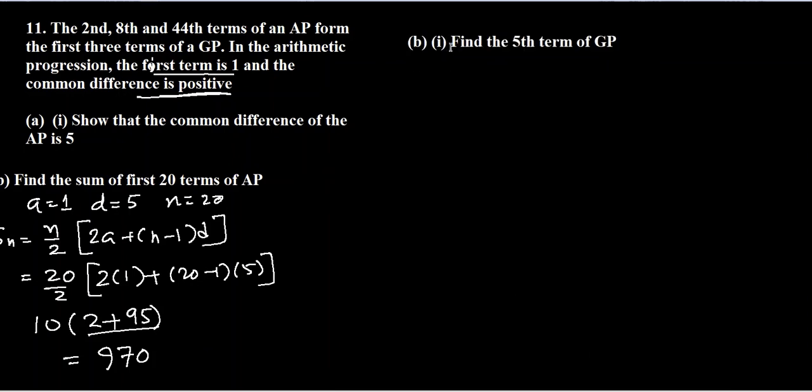In part B, they say find the fifth term of GP. a5 of any GP is a times r to the power n minus 1, so 5 minus 1 is 4. First we should know what is a, then r, and then find the fifth term. The first term of GP was the second term of AP, so a for GP was 1 plus D.